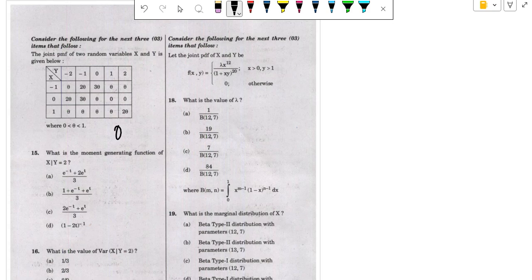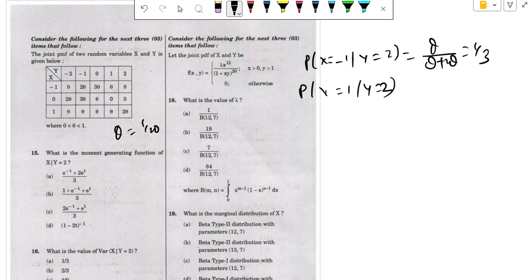Theta equals 1/20. So probability of x = -1 given y = 2, theta y over theta plus 2 theta equals 1/3. Then probability of x = 1 given y = 2, this is 2 theta by 3 theta, that is 2/3.